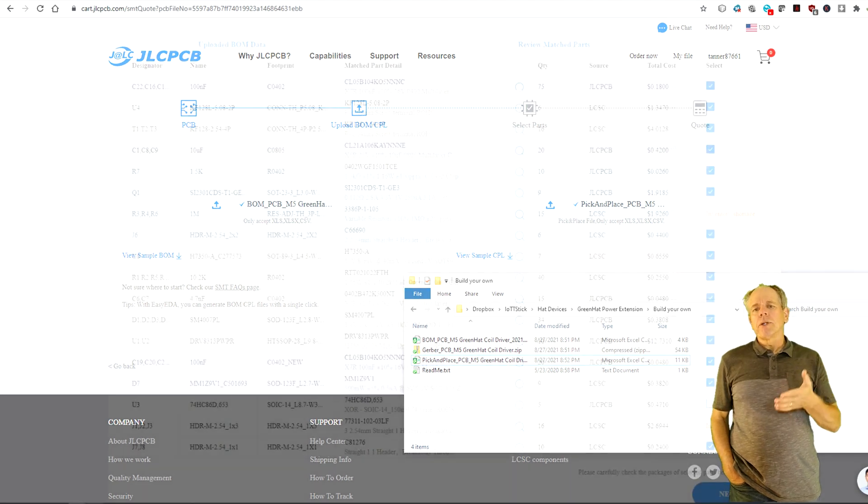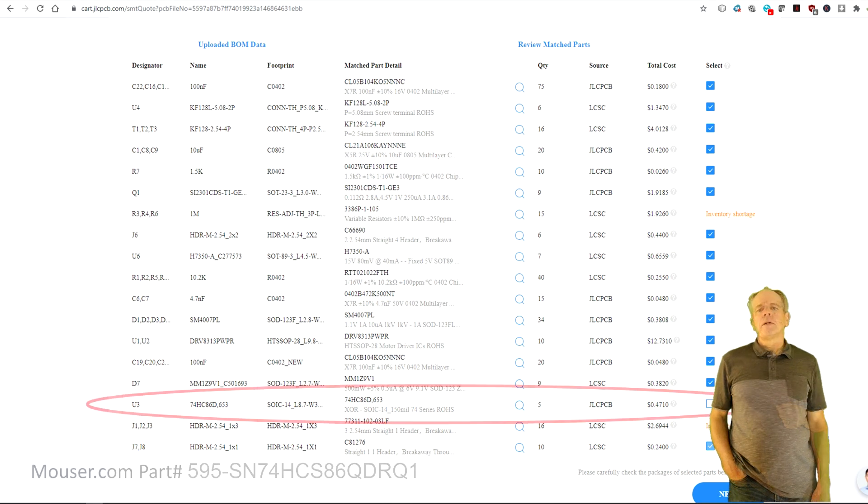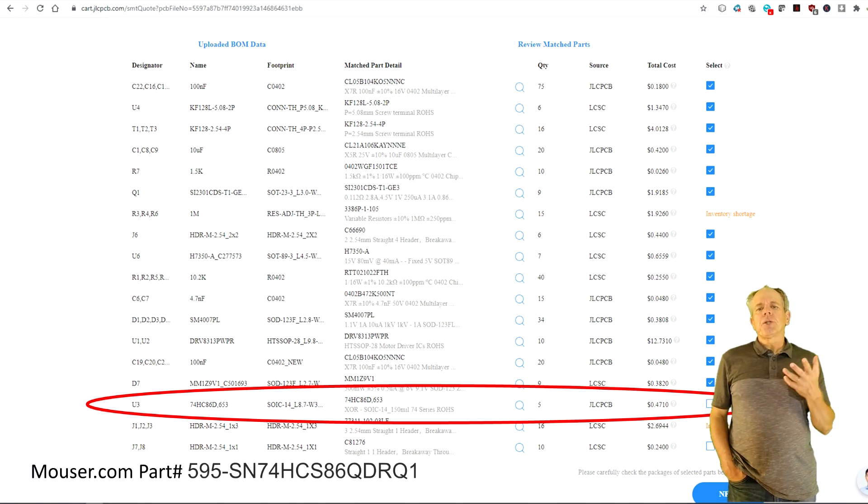On the next page, you upload the bill of material file and the pick and place data. Next, you select the components you want to have assembled. Here, you need to have a closer look. First, you need to check what they offer to assemble. Sometimes, they are out of stock on some components and they will let you know. If that's the case, you can source them from elsewhere and install them yourself once you have the boards. Or you choose to cancel and come back later to see if they are in stock again.